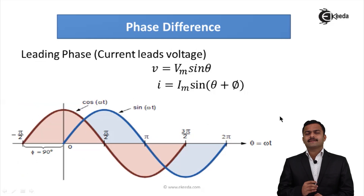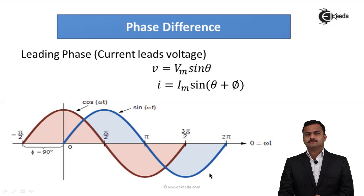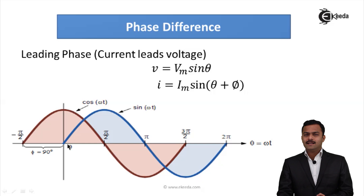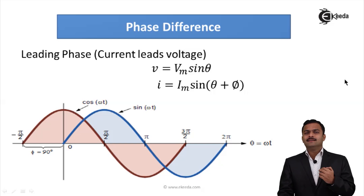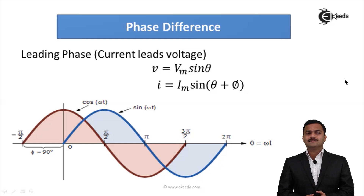Now consider the leading phase. This reference quantity is V = Vm sine θ, starting from 0. Whenever V starts, the other quantity I has already started — its starting point is somewhere before 0. Since I has already started, it means it is leading — it has taken a lead over the reference. So that quantity is a leading quantity.